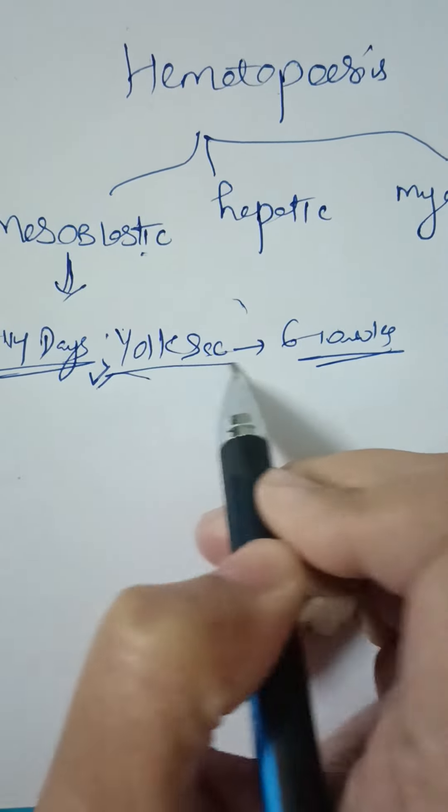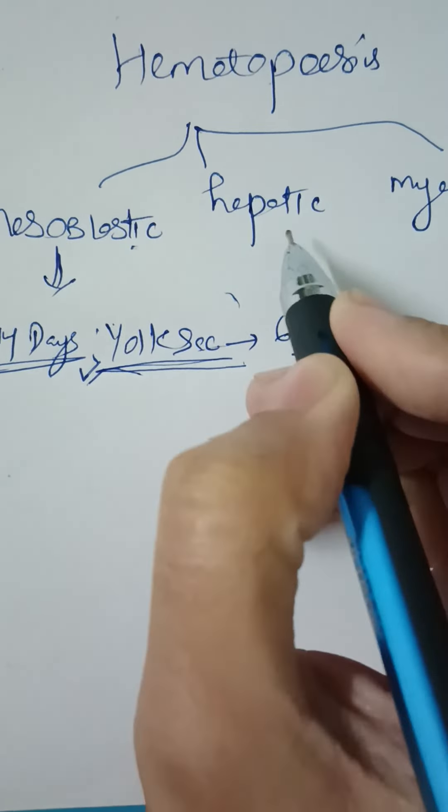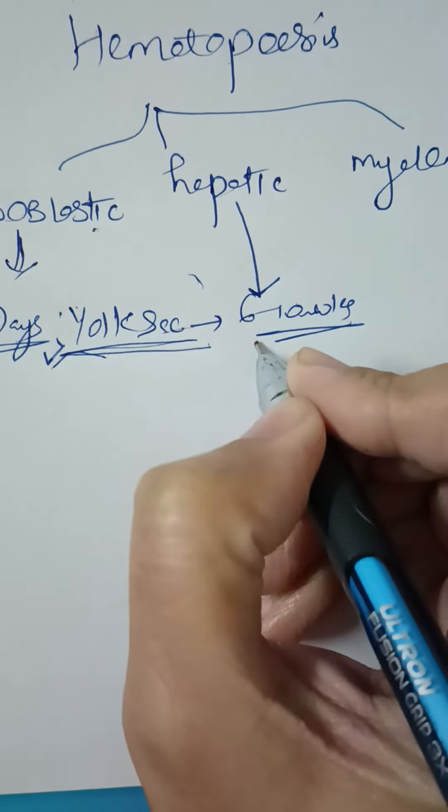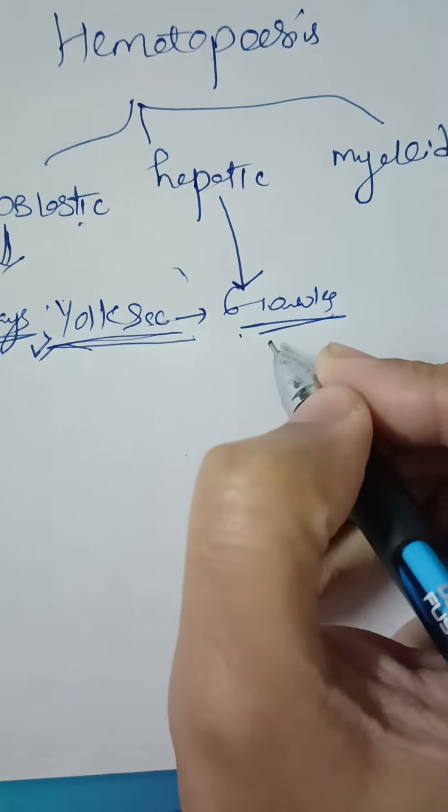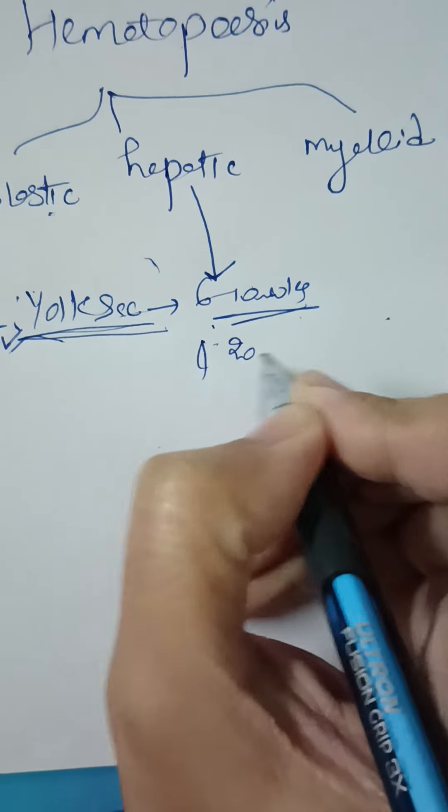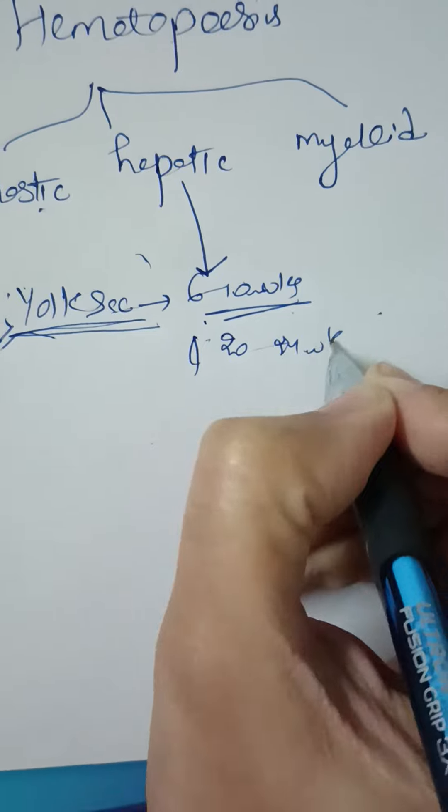The yolk sac is the major source of hematopoiesis. After that, it is replaced by the liver, which is the major source from 6 to 10 weeks throughout pregnancy, but peaks at 20 to 24 weeks.